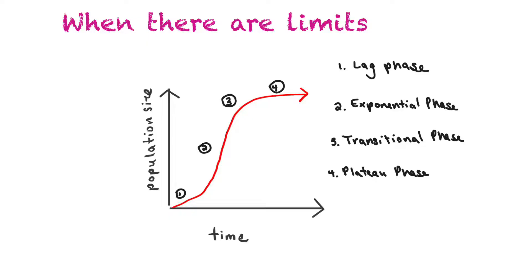So habitat, water, food, etc. So if a population established itself in an area it would take an S-shaped curve like the one you see here. And there's actually some different phases in this population growth.